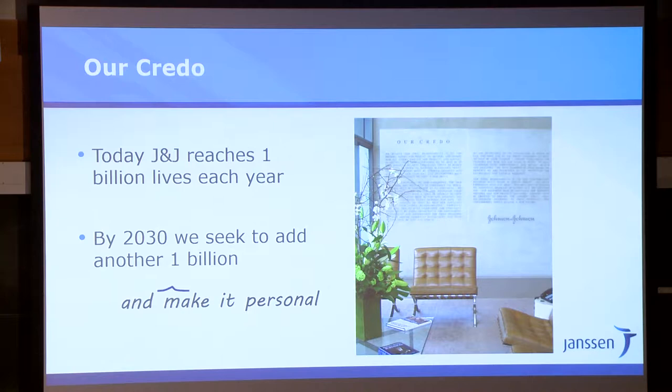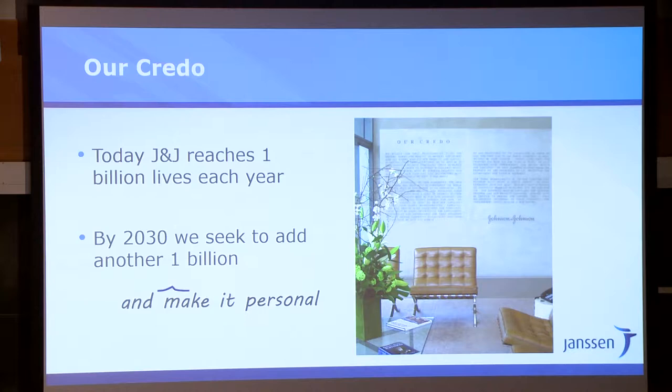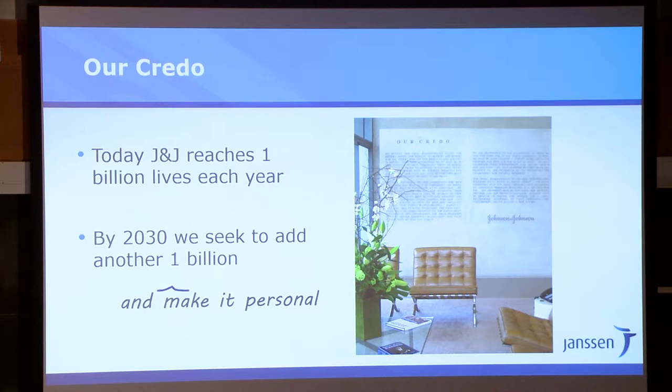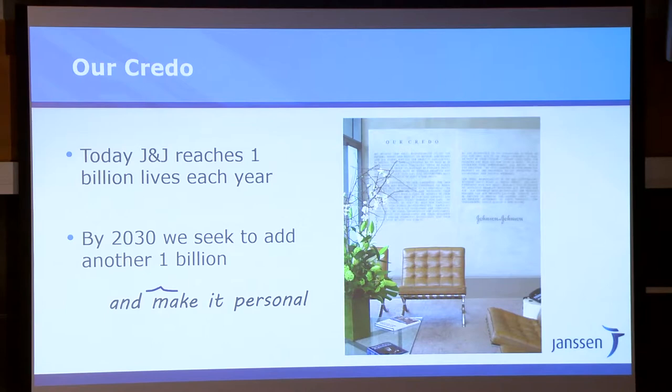It talks about responsibility to our communities and our environment, and responsibility to the employees. And then it says at the end we worry about shareholders — if we do the three first things right, shareholders will benefit. It's been true since 1943. Today J&J reaches one billion clients, customers, patients per year. It's a stunning number, and the goal is to go to the next billion.